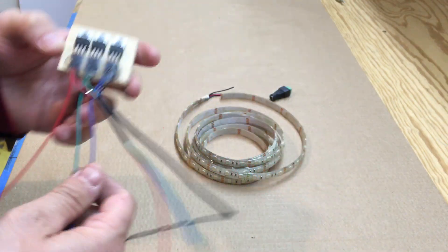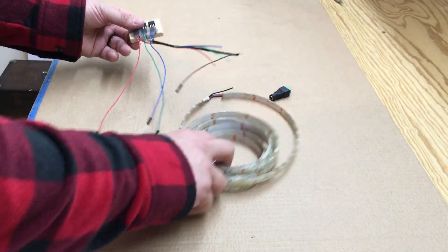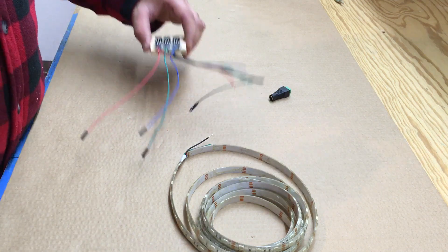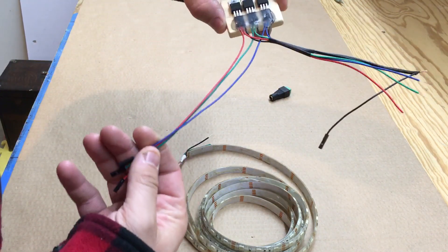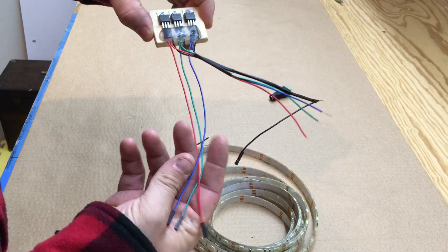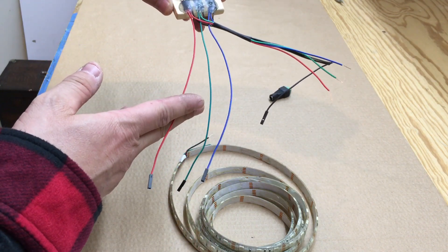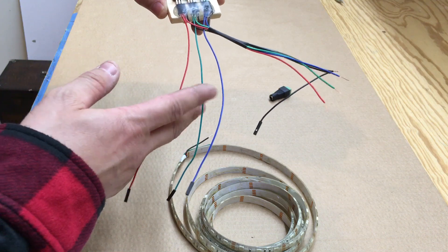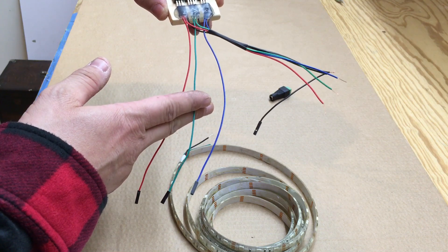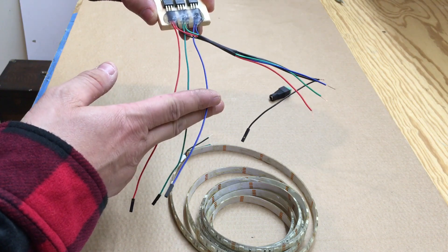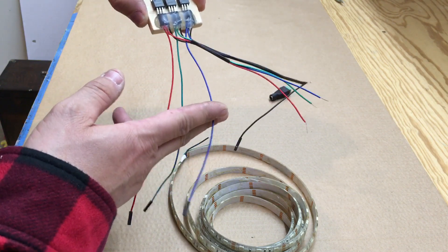So all we need to do is these three here will go to the Pi. The red will go to GPIO 17, the green will go to GPIO 22, the blue will go to GPIO 24.